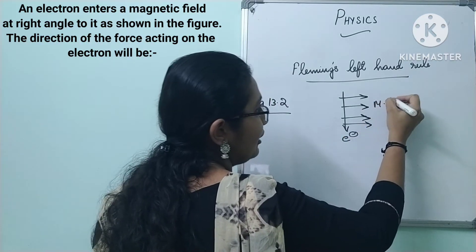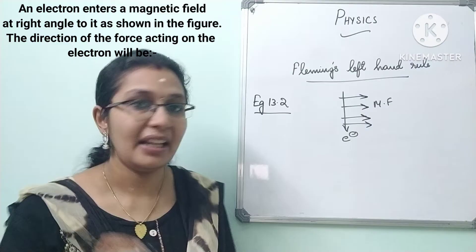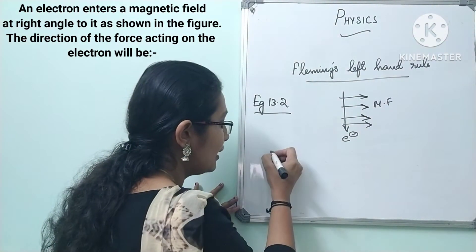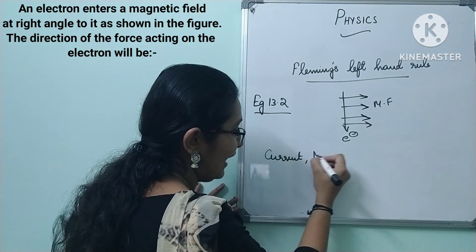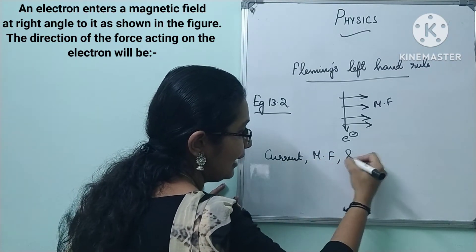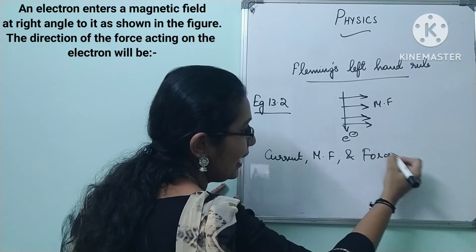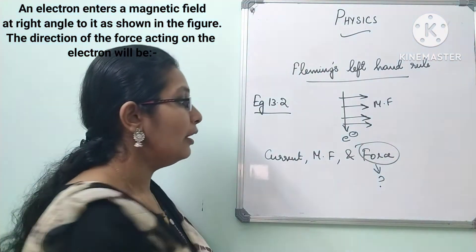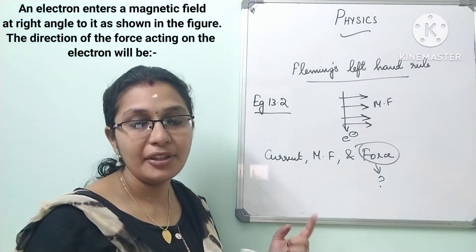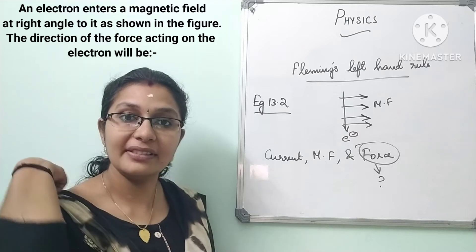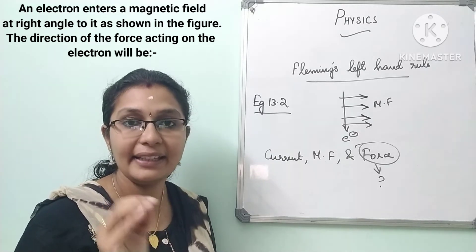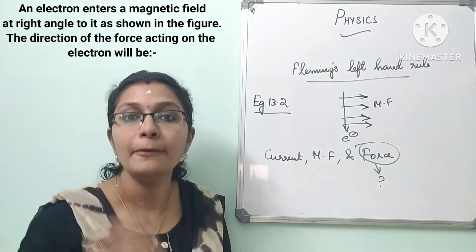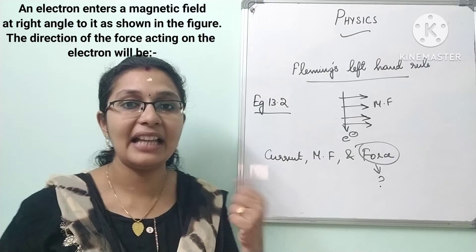Generally using Fleming's Left Hand Rule, three things we consider: current, magnetic field, and force. This force is what we are going to find. If in your question the direction of current is given directly, take it as such. But here, instead of current, they have given the direction of the electron.